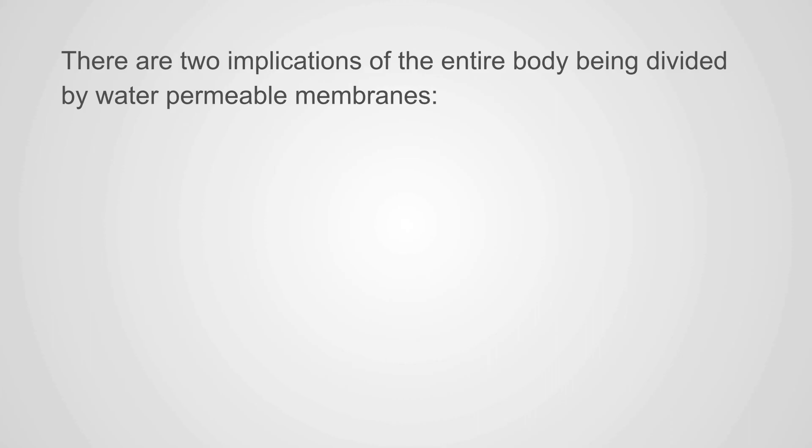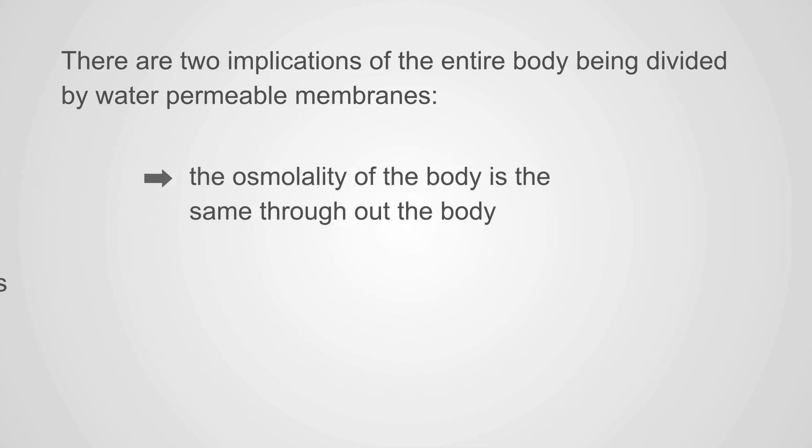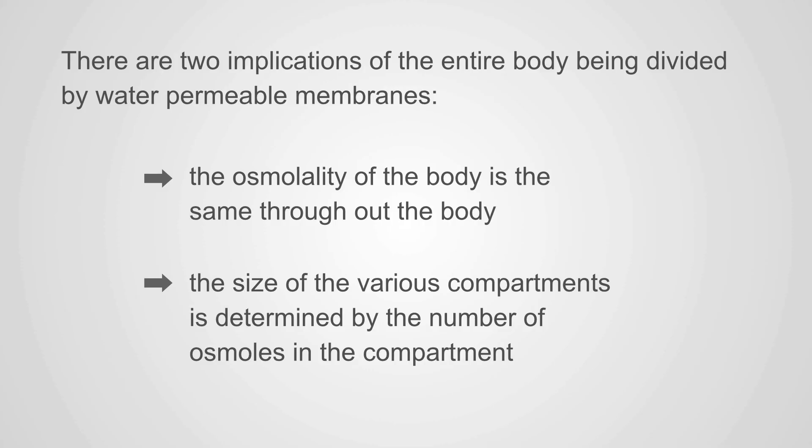There are two implications of the entire body being divided by water permeable membranes. One, the osmolality of the body is the same throughout the body. And two, the size of the various compartments is determined by the number of osmoles in that compartment.